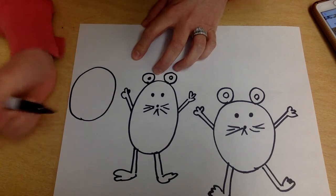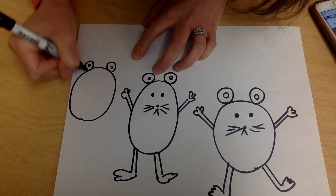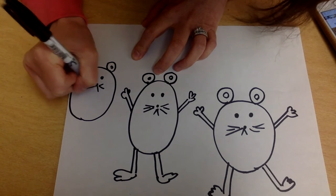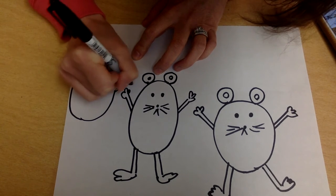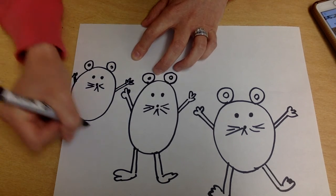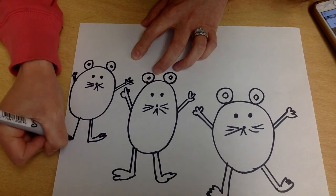Circle or oval, circle, circle, dots for the eyes, dot for the nose, whiskers, mouth, arms, arms, and the legs.